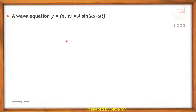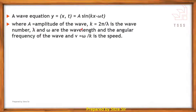A propagating wave, also called an advancing or traveling wave, has the equation: y = A sin(kx − ωt), where A is the amplitude of the wave, k = 2π/λ is the wave number, λ is the wavelength, ω is the angular frequency, and v = ω/k is the speed of the wave.